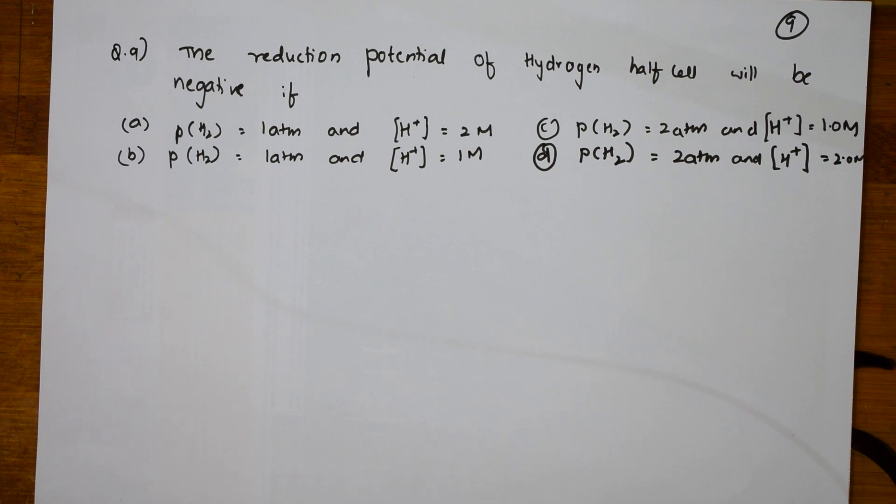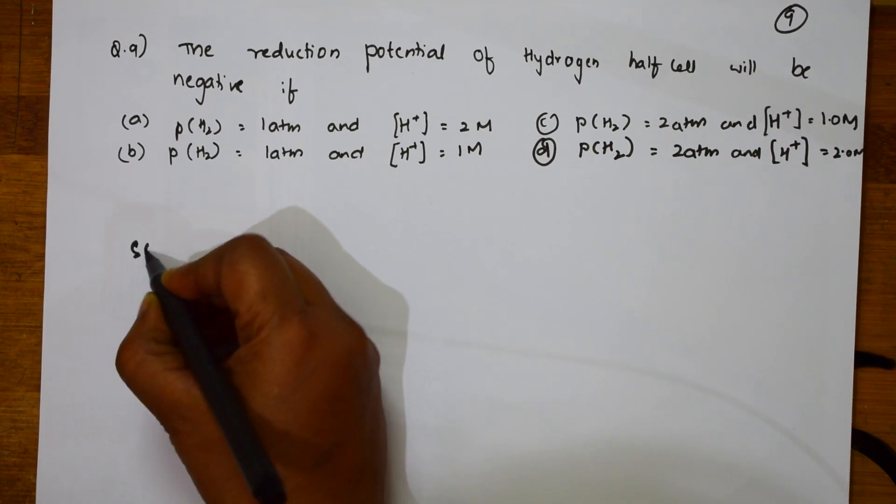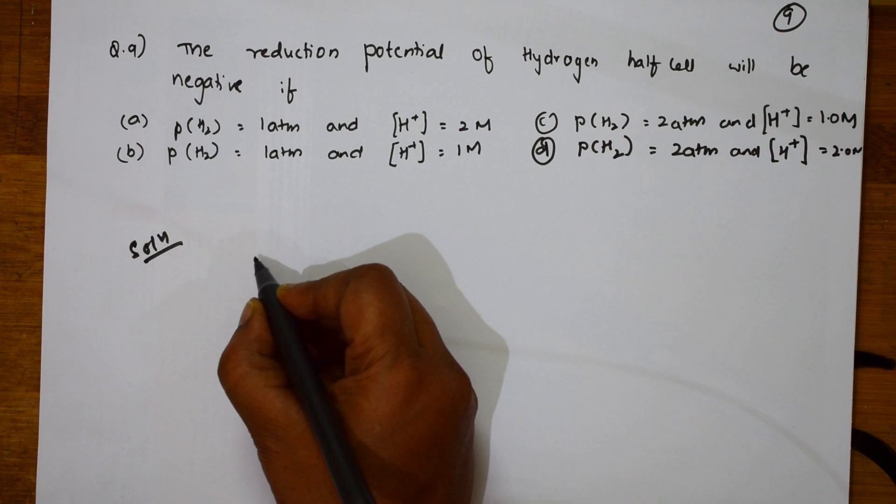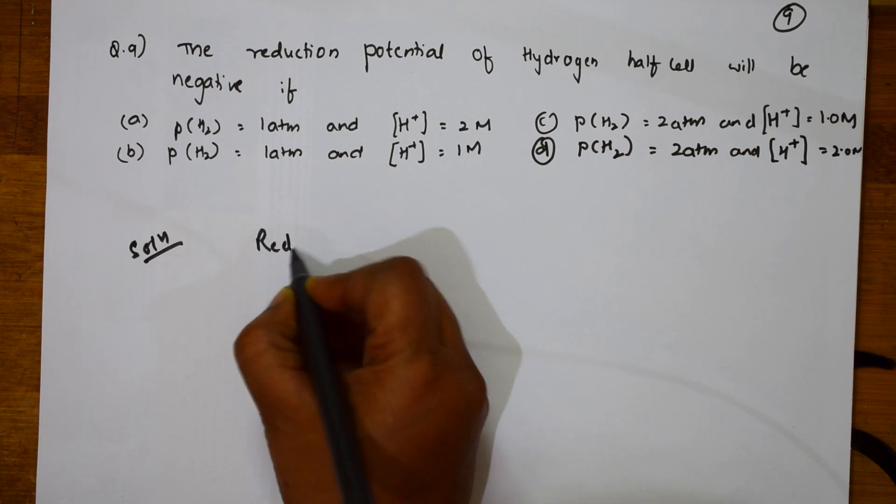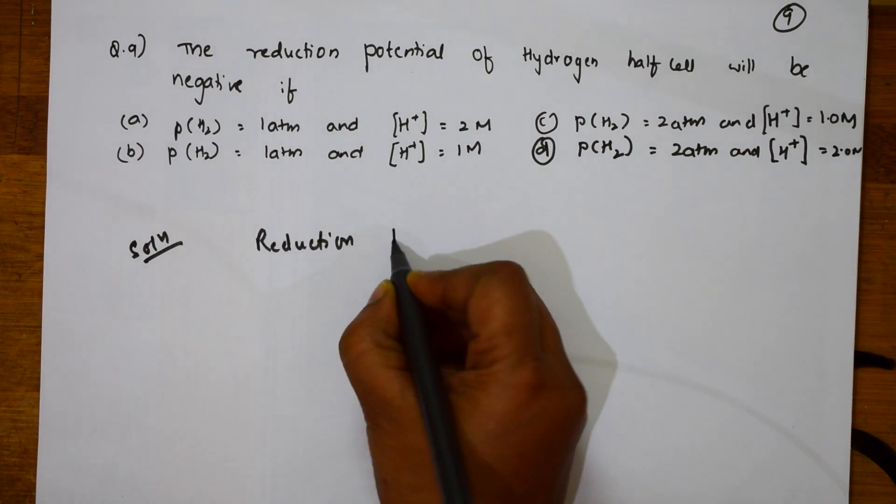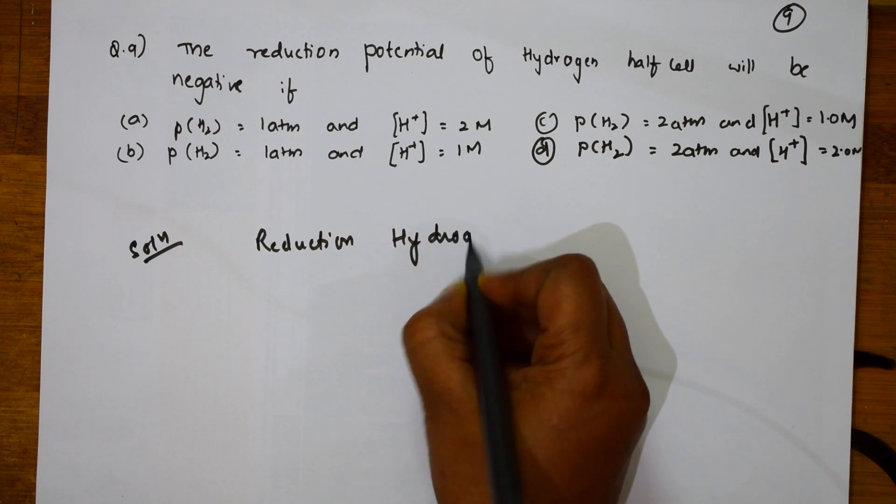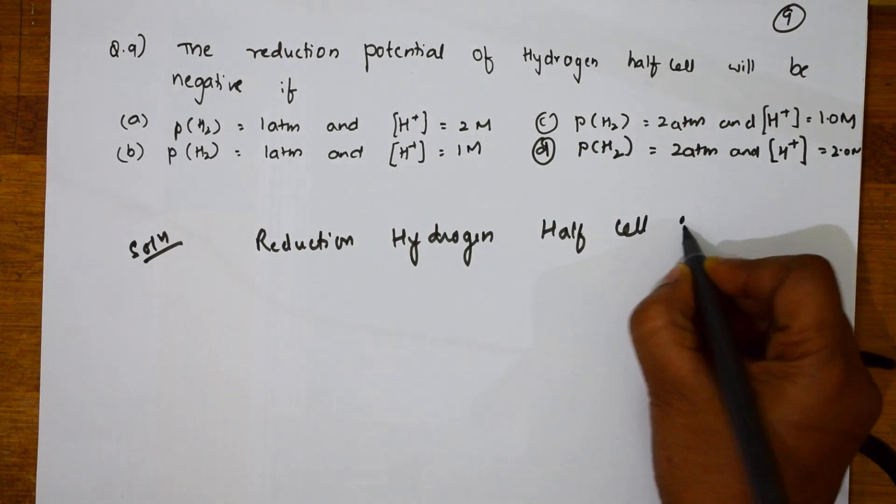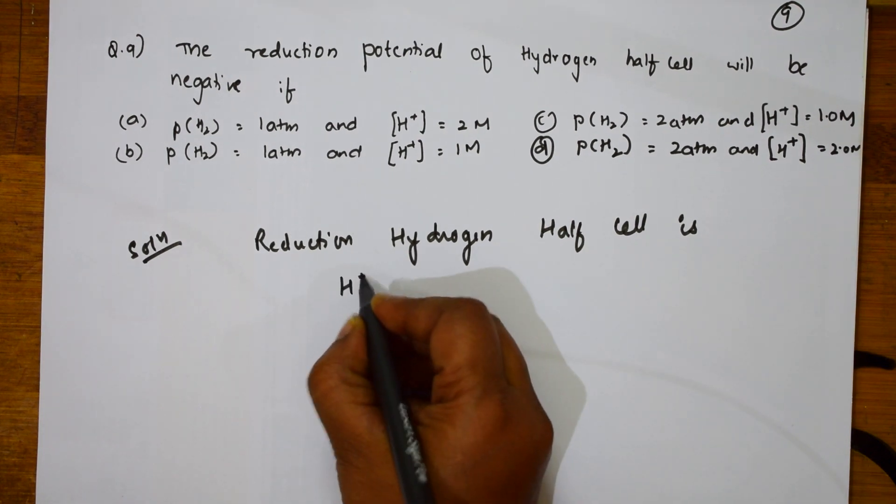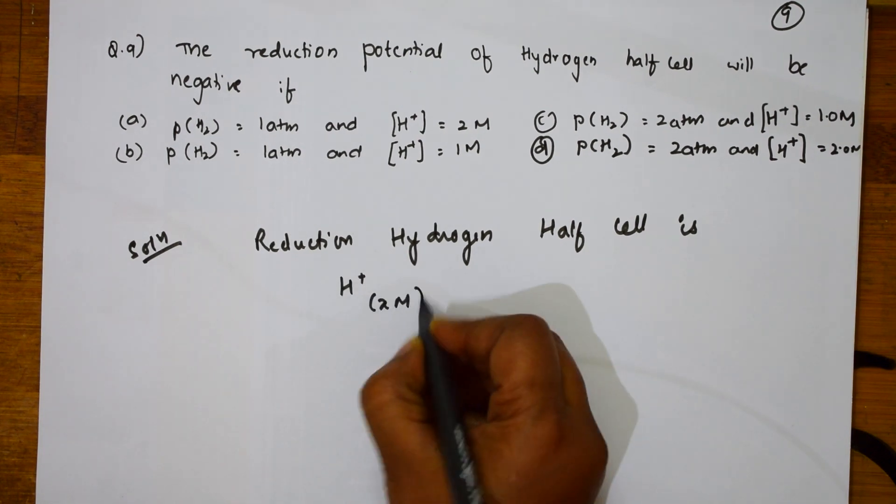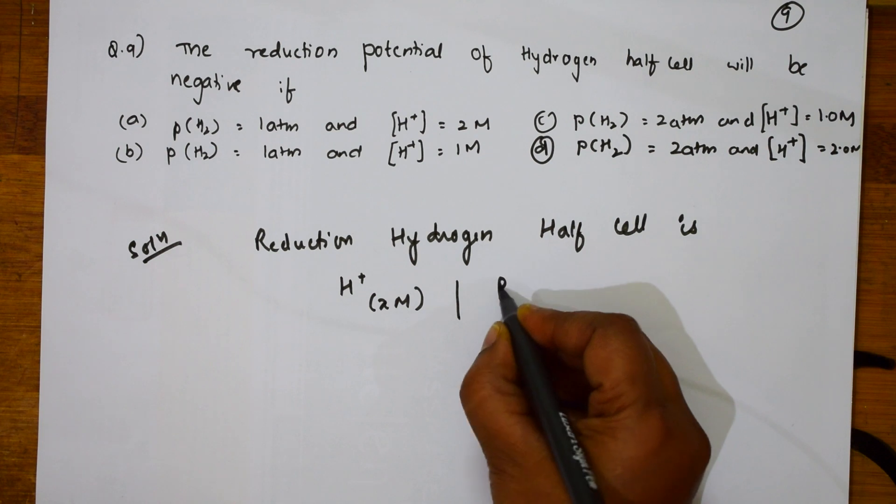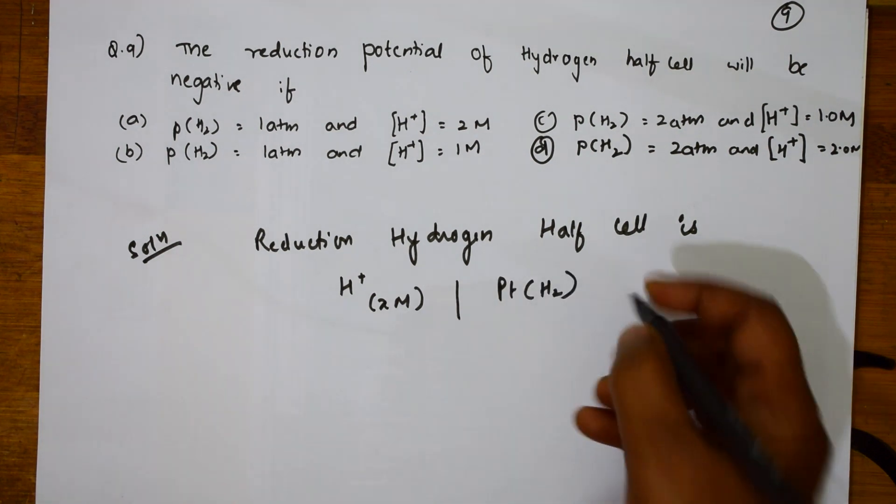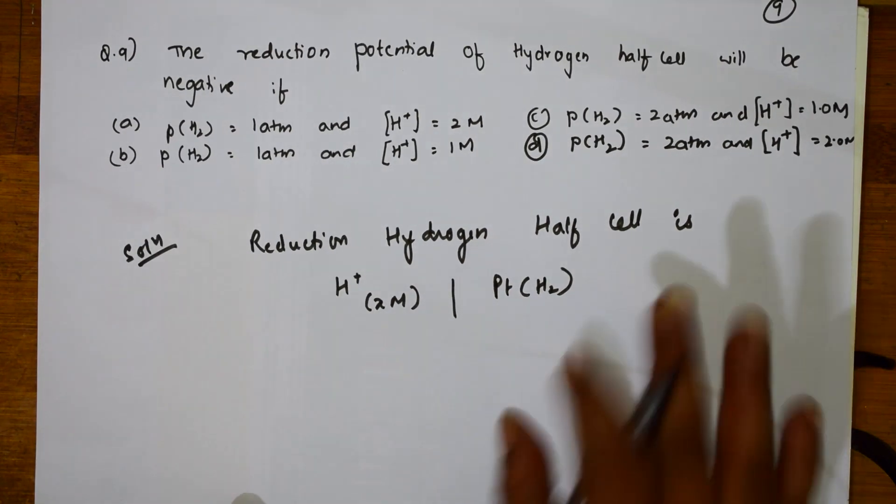So first important thing, first let us write the cell notation. I am going to have to solve this. The reduction hydrogen half cell, how should I write? Reduction hydrogen half cell is Pt, H2, that is at same pressure.